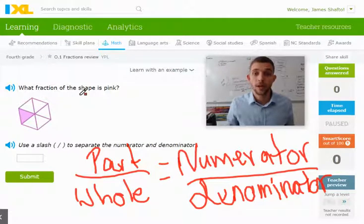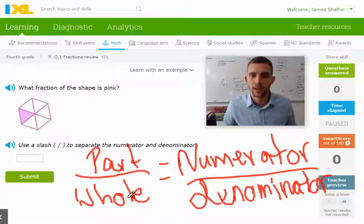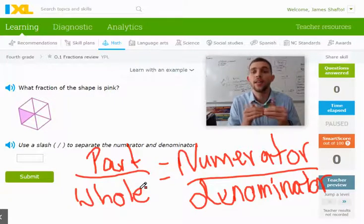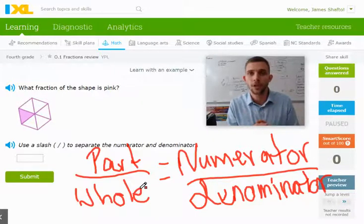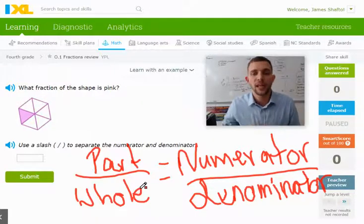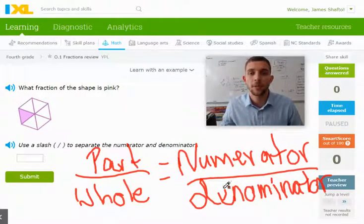Remember that a fraction involves a part and a whole, and the part is called a numerator, that's the top number on a fraction, and the whole is called the denominator, which is the bottom number on a fraction.